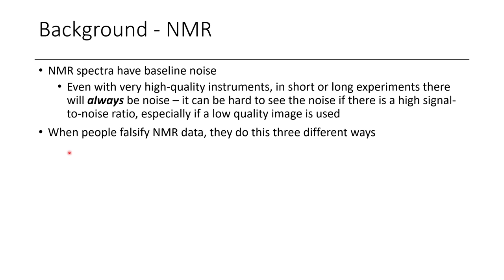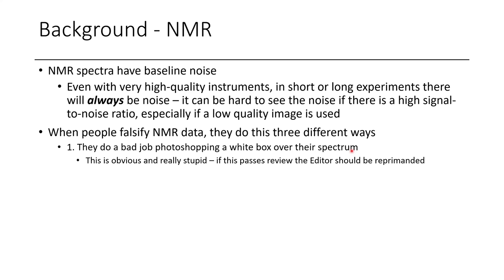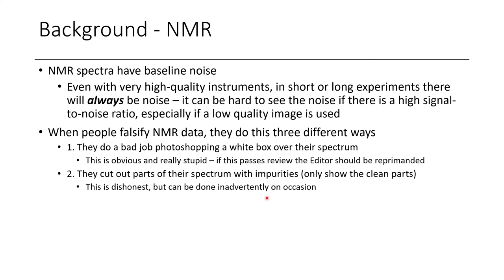When people falsify NMR data, they tend to do it one of three different ways — though this isn't an exhaustive list. In the first case, they do a really bad job photoshopping a white box over the spectrum. When you see this, you realize it's really obvious, and if it gets past review, the editor should be reprimanded. These are so obvious — this is the type of thing a high schooler would do.